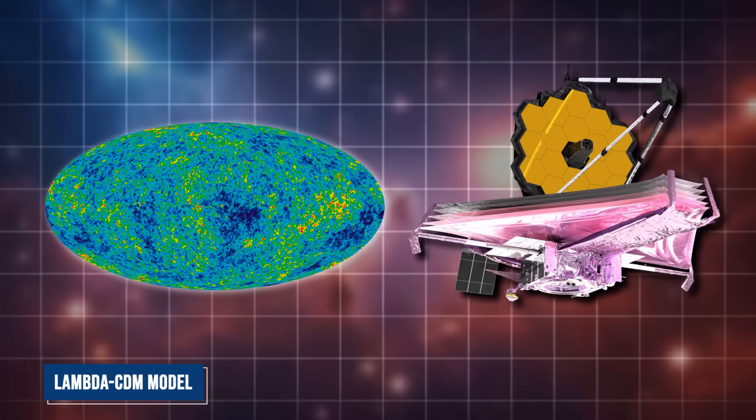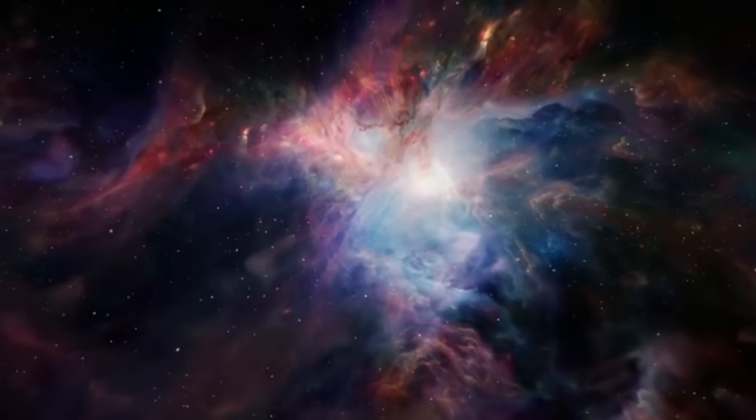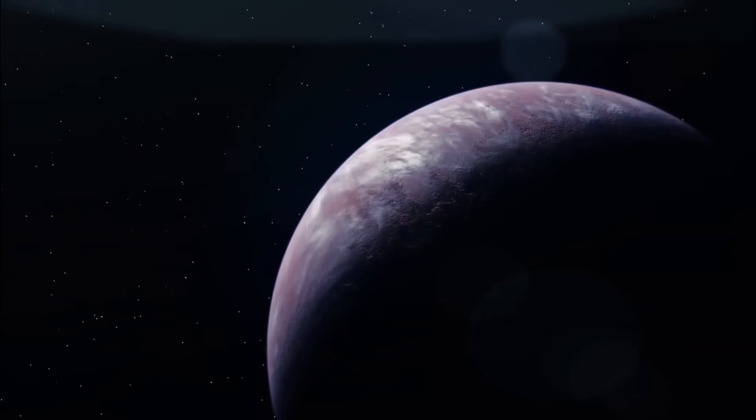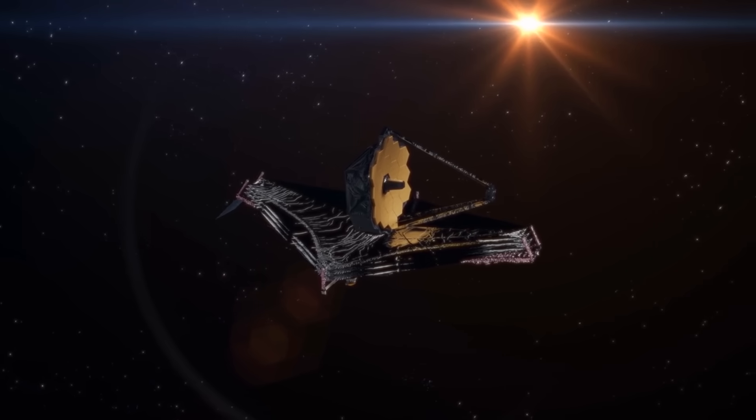The prevailing Lambda CDM model, which serves as the backbone of modern cosmology, predicts a gradual evolution of cosmic structures. The further back we look, the more chaotic and unformed these structures should be. Yet here was a galaxy that looked fully developed.